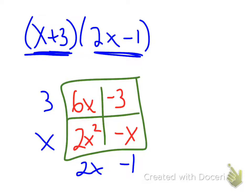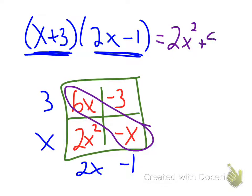So now when I want to write this as a sum, I have my 2x squared. I have my like terms right here. 6x and negative x is going to be a positive 5x, and then minus 3.